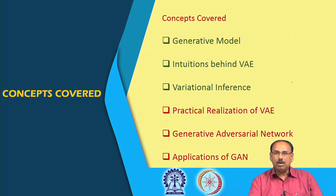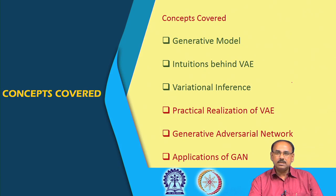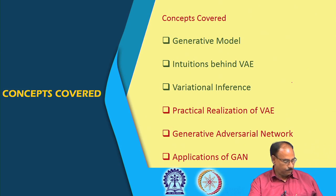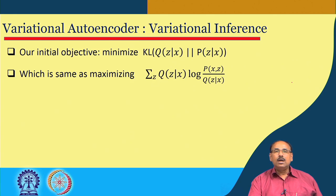We have discussed about what is variational inference. Today we are going to discuss how to practically realize a variational autoencoder. Then we will briefly discuss about another generative model known as generative adversarial network, and we shall conclude this course with the applications of generative adversarial network.